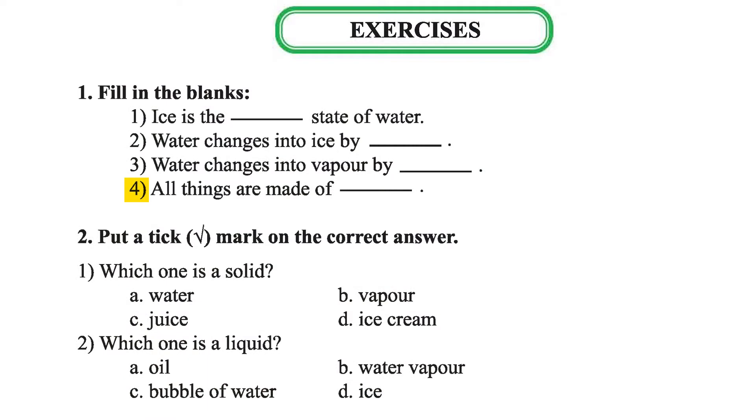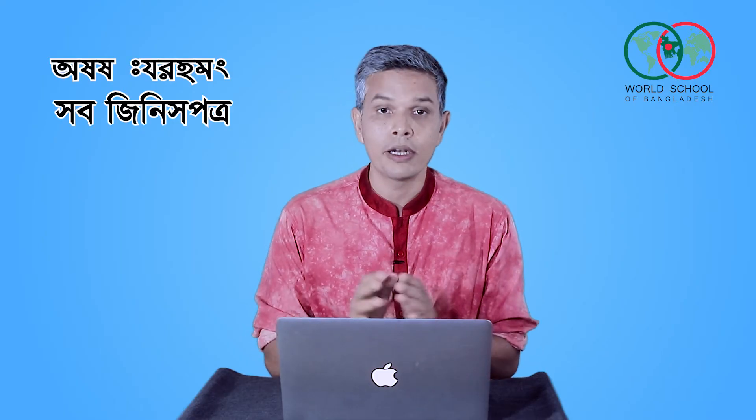Number 4: All things are made of blank. All things — meaning all things — made of. All things are made of matter.